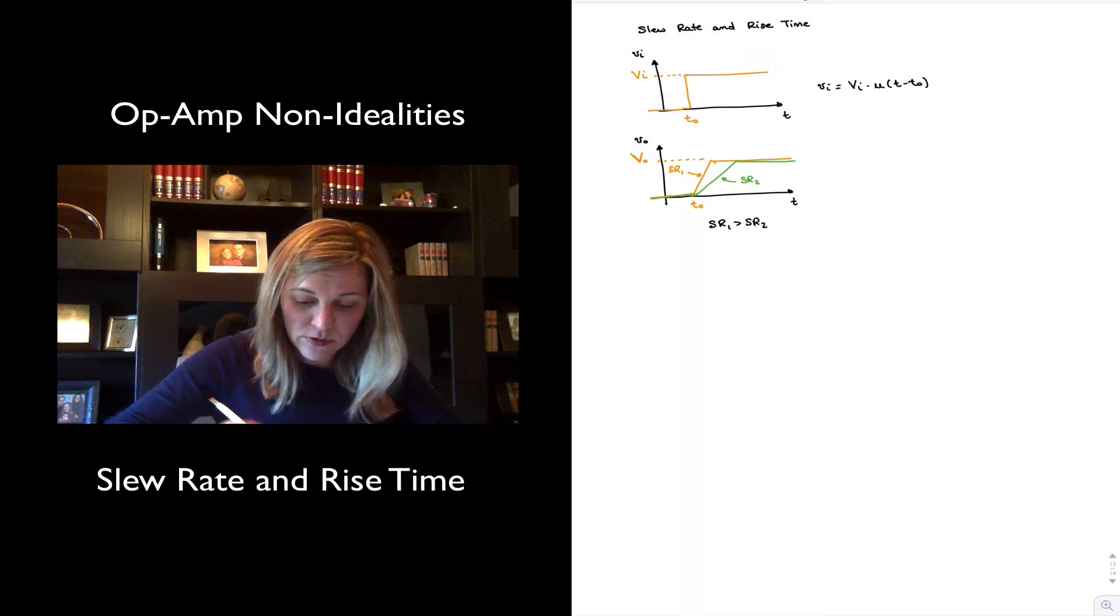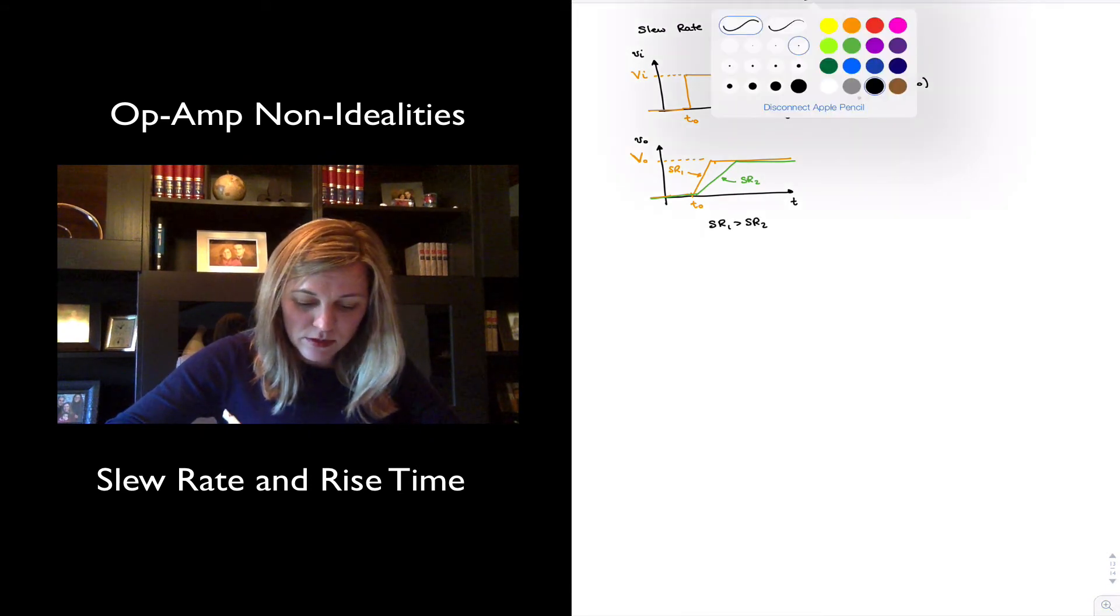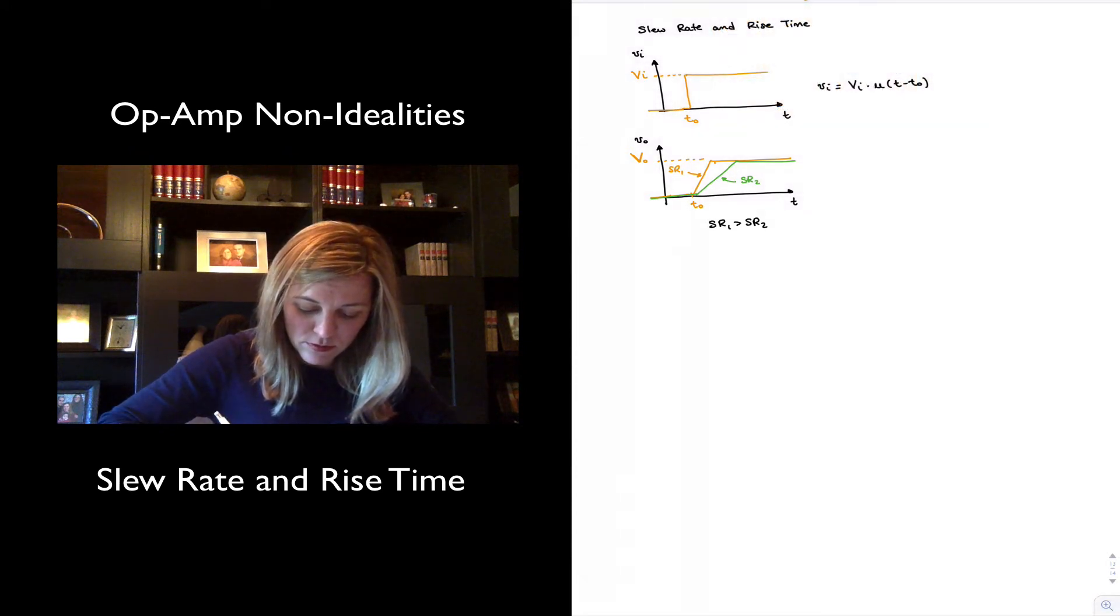In fact, the slew rate is equal to the slope of this line. That slope will be SR1, and the slope of the green line will be the slew rate of the second amplifier.